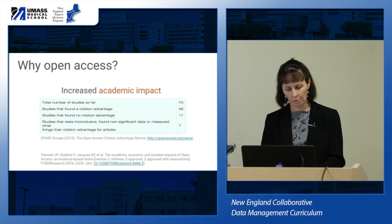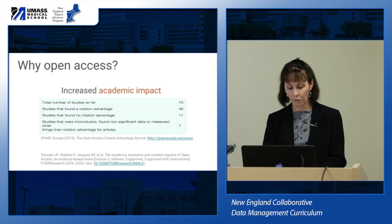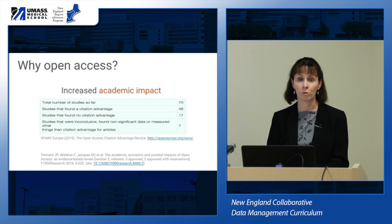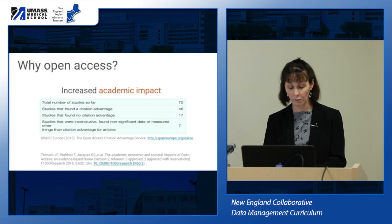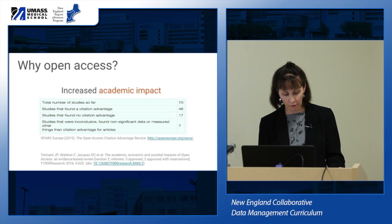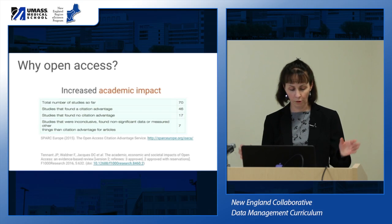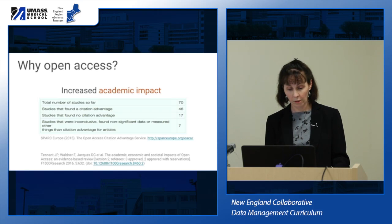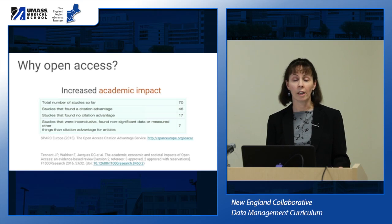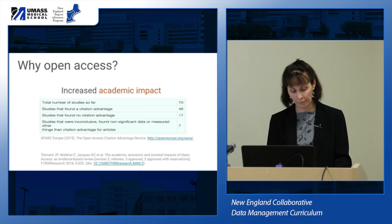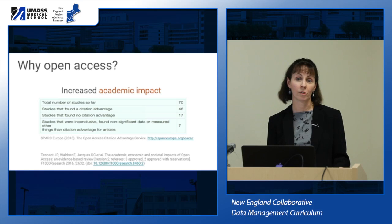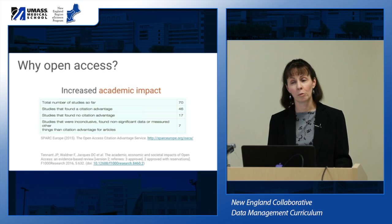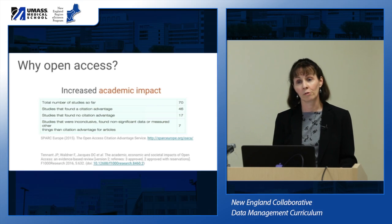A second benefit of open access is increased academic impact. When research articles are freely available to be downloaded, read, and reused, they demonstrate greater impact than articles locked behind subscriptions because they have increased visibility, dissemination, and receive more citations. The Tenant article referenced on the slide is a recent overview of all studies and definitively identified a broad citation advantage for researchers who publish openly. This increase in citation and impact is one reason why most publishers now have some open access journals or offer open access on a per-article basis.